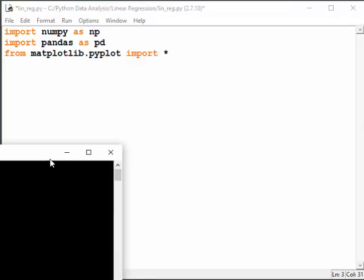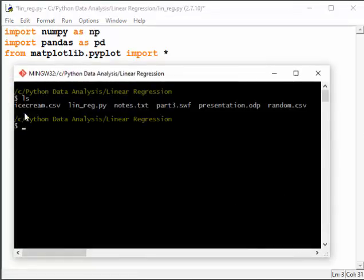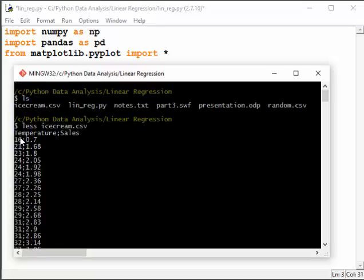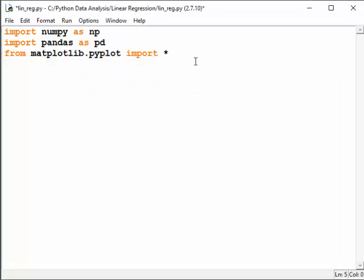My dataset is a CSV file called icecream.csv. We can look at it. It contains some data. It's separated by a semicolon. This data contains the amount of sales of ice cream for different temperatures. Let's import this file with read.csv.